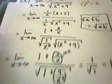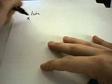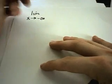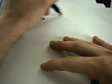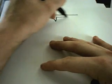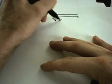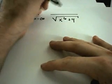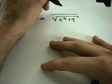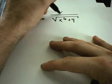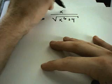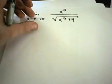Let's take a slight variation of this problem. So let's look at the limit as x goes to, this time, negative infinity. And how about we make it the square root of x to the sixth plus 4 over x to the third.